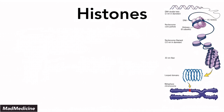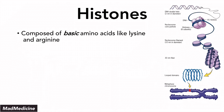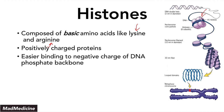Histones are essentially basic amino acid proteins, and the majority of histones are composed of lysine and arginine amino acids. The reason they're basic is because they end up having a positive charge on the proteins. These positively charged proteins bind easily to DNA because the phosphate backbone of DNA carries a negative charge. So you have the positively charged histone binding to the negatively charged DNA, making the whole function of histones possible.